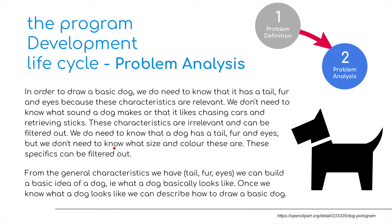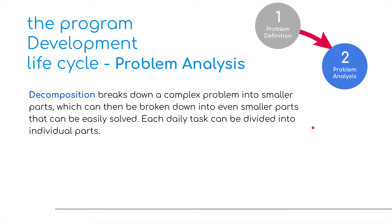We do need to know that a dog has a tail, fur and eyes, but we don't need to know what size and colour these are — these specifics can again be filtered out. From the general characteristics — tail, fur, eyes — we can build a basic idea of a dog, i.e. what a dog basically looks like. Once we know what a dog looks like, we can describe how to draw a basic dog. Decomposition also forms part of the computational thinking in the problem analysis.